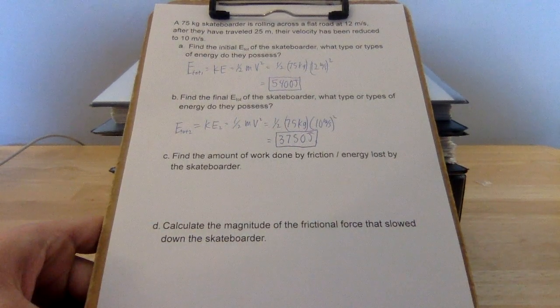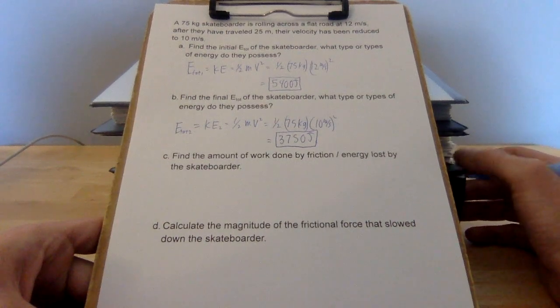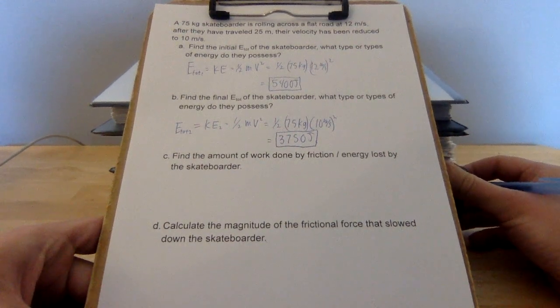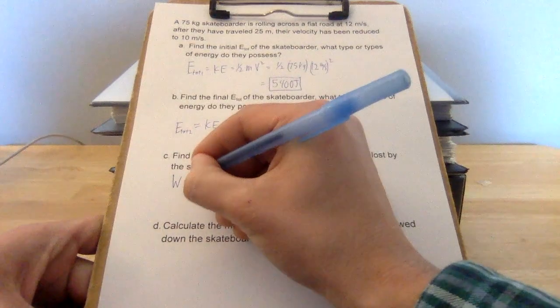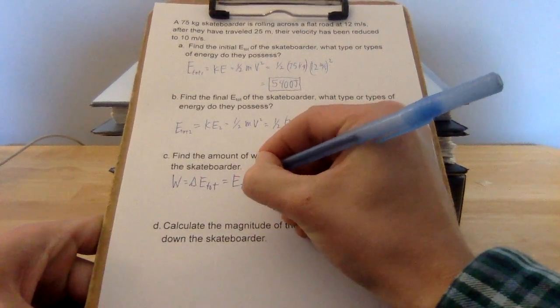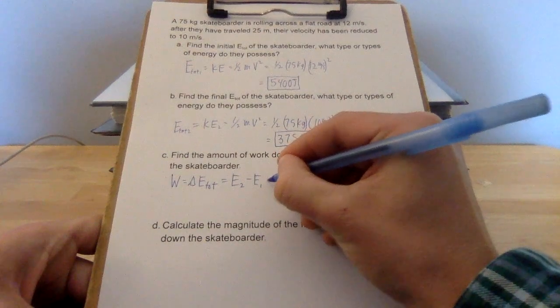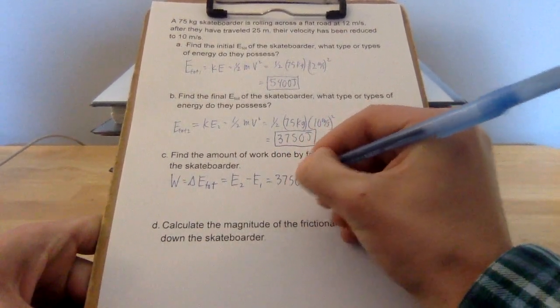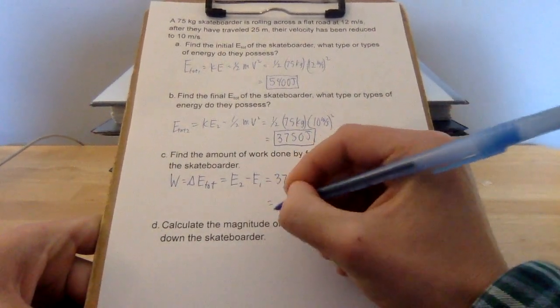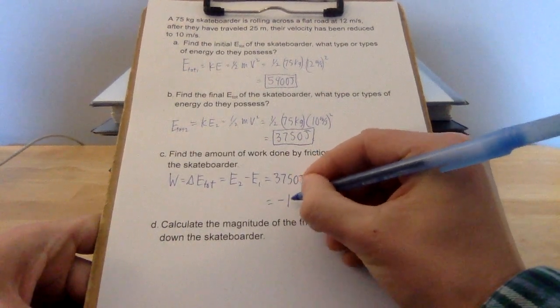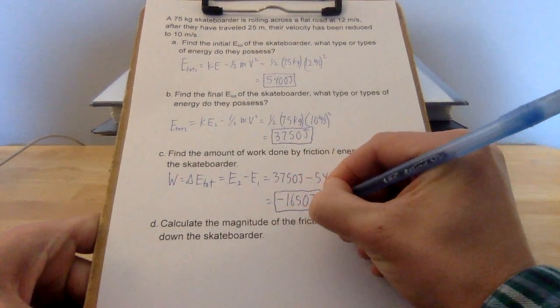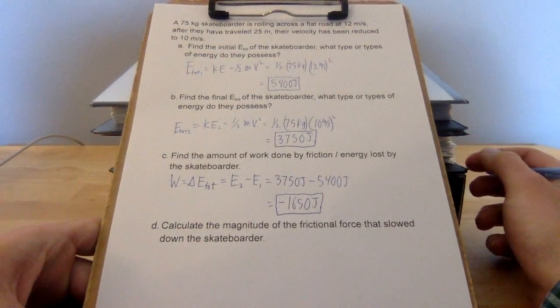There's two ways to find work. The first way is W equals Fd cos theta, and the other way is work equals change in energy. In this scenario, we're going to use work equals change in energy because we have two energy values. So work equals change in energy, which is always final energy minus initial energy. We get that the work done by friction was equal to negative 1,650 joules. Negative sign is critical. Energy was lost, so we need to have a negative work done.